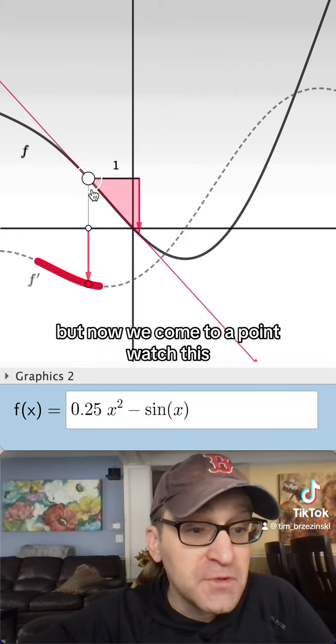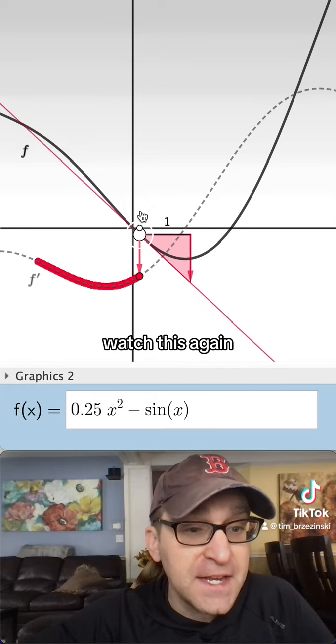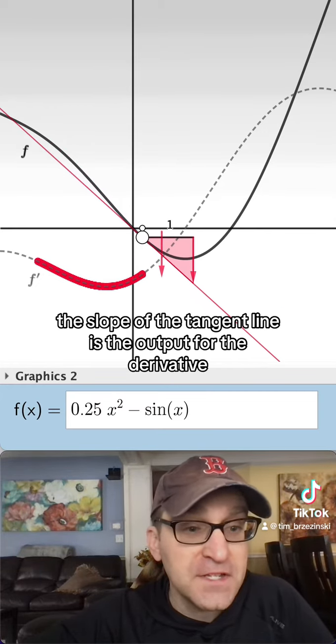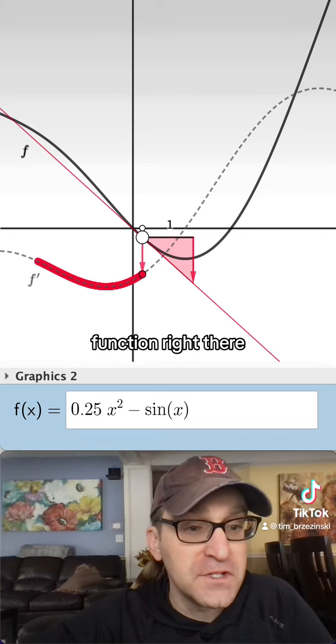But now we come to a point, watch this. Again, at any point, the output of the slope of the tangent line is the output for the derivative function right there.